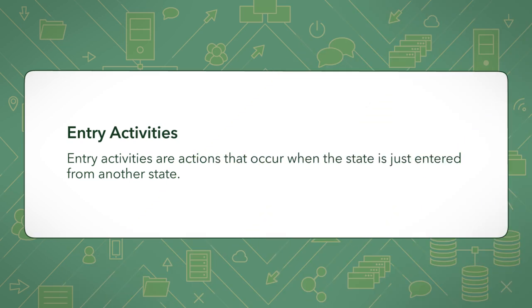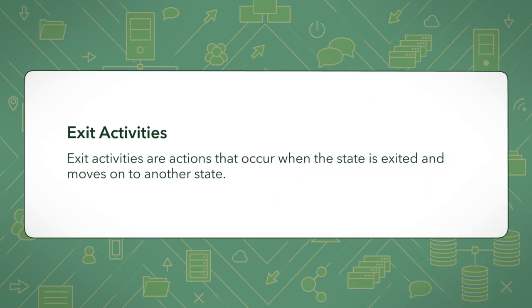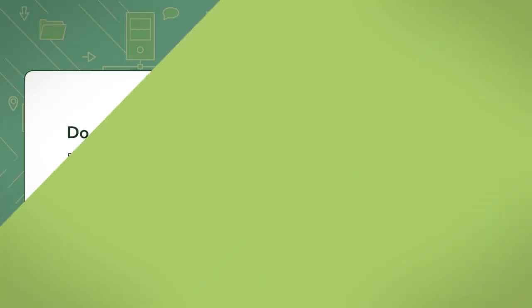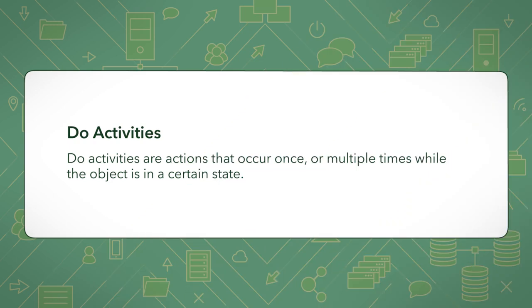Entry activities are actions that occur when the state is just entered from another state. Exit activities are actions that occur when the state is exited and moves on to another state. And do activities are actions that occur once or multiple times while the object is in a certain state.